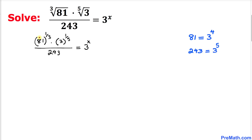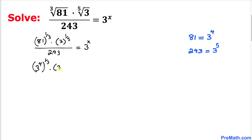Now let's focus on 81 — this can be written as 3 to the power 4. Likewise, 243 in the denominator can be written as 3 to the power 5. So we can rewrite the equation as 3 to the power 4, then to the power 1 over 3, times 3 to the power 1 over 5, divided by 3 to the power 5, equals 3 to the power x.